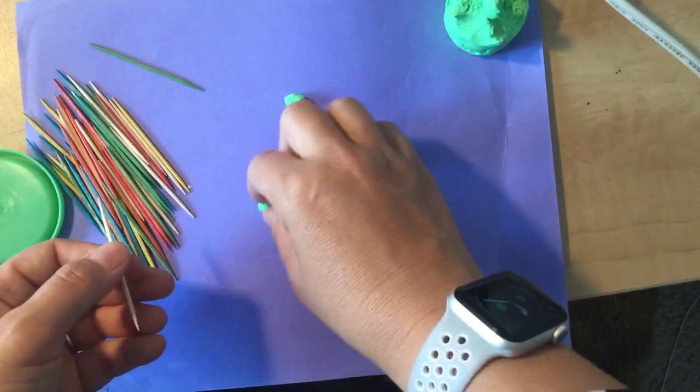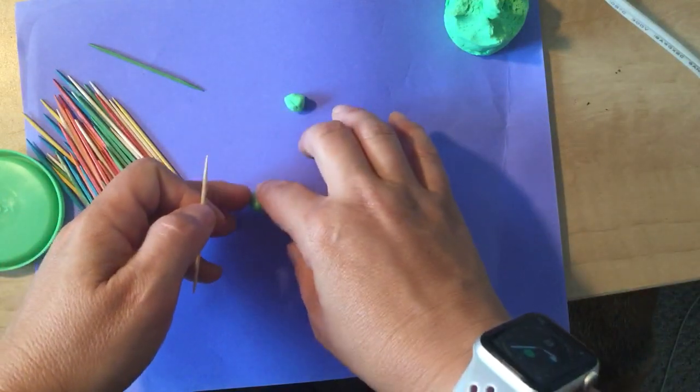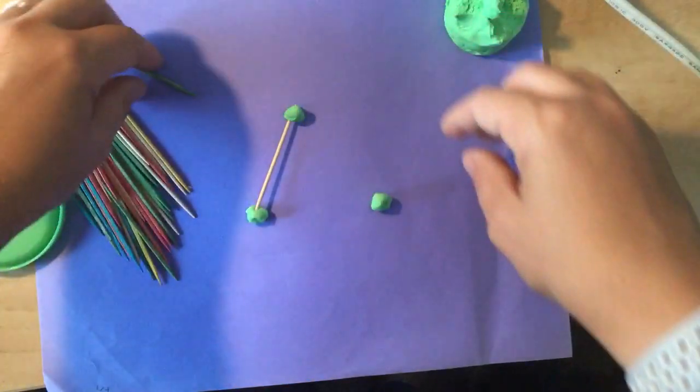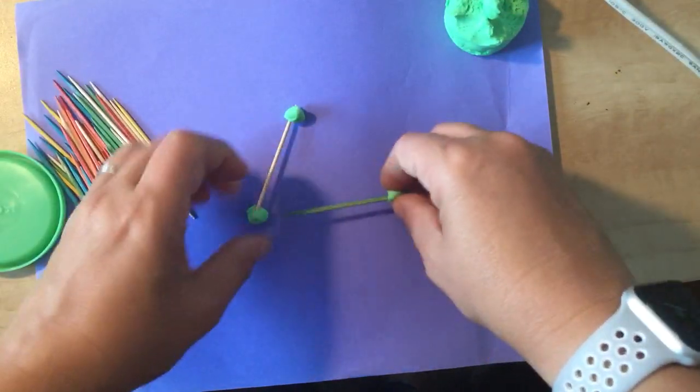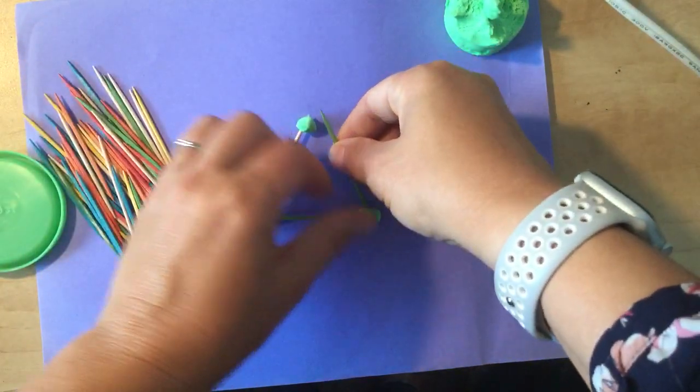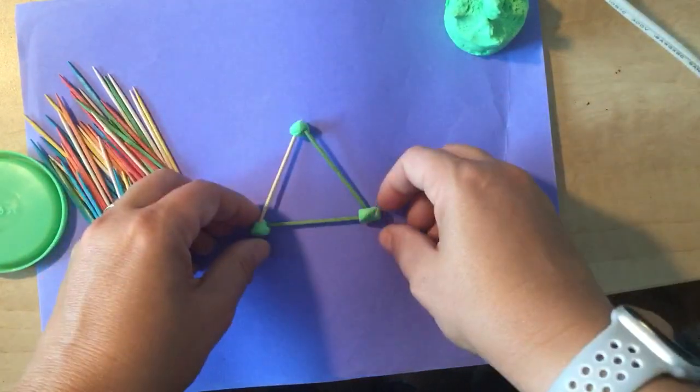All right, so I bet you can tell what polygon I'm going to make right here. All right, so this is a triangle. All right, so we have one, two, three sides. That makes a triangle.